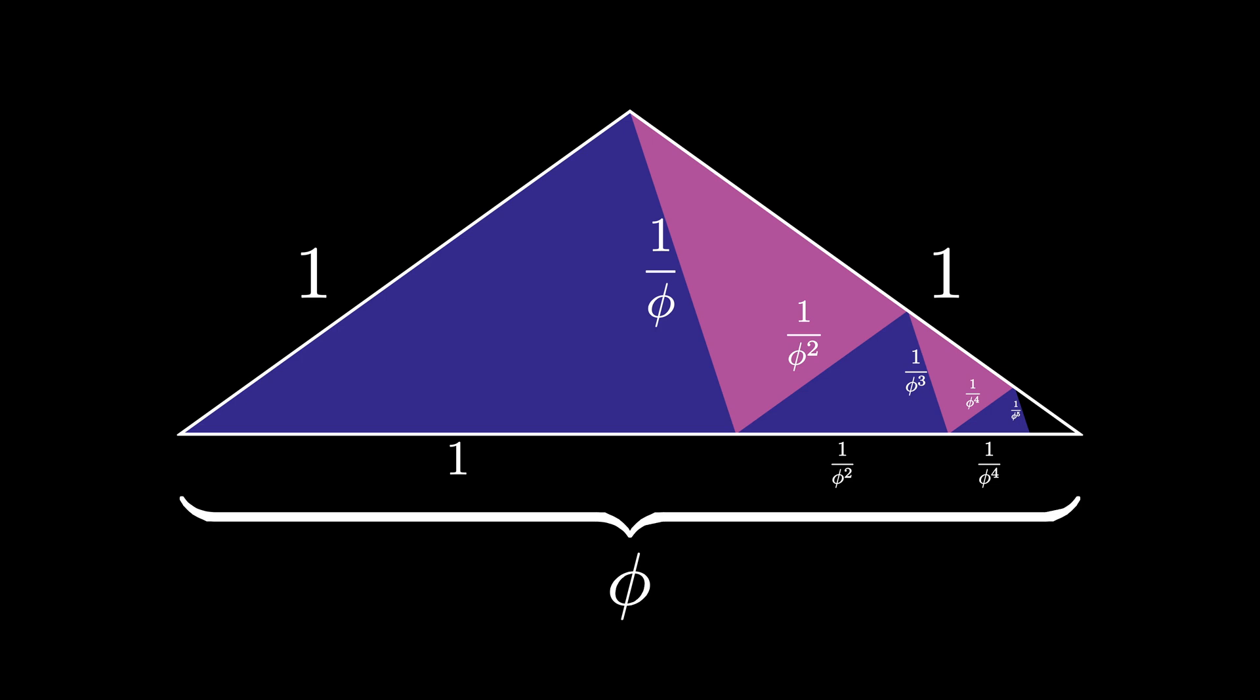We can continue this process indefinitely. Each stage, we take the previously scaled copy of the golden triangle, and scale again by the value 1 divided by the golden ratio, rotate and fit it in the empty space.